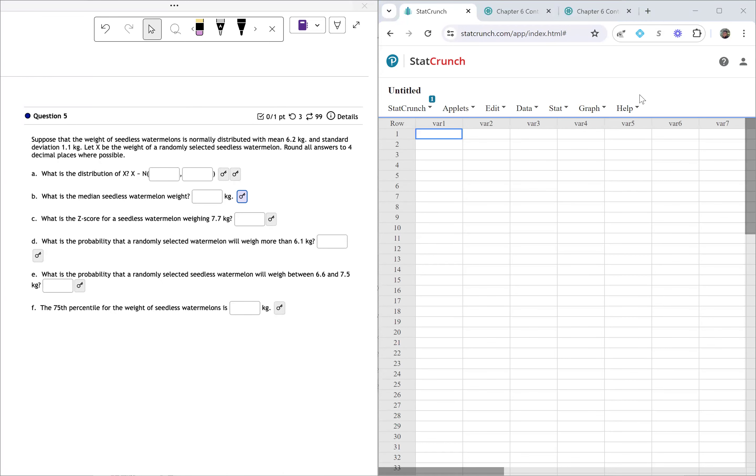Hi folks, welcome to the second example from chapter six. In this video, we're going to take a look at question number five. Suppose that the weight of seedless watermelons is normally distributed with mean of 6.2 kilograms and standard deviation 1.1 kilograms. Let x be the weight of a randomly selected seedless watermelon. We round all answers to four decimal places where possible.